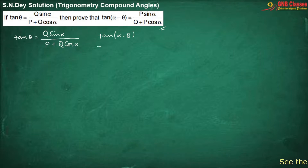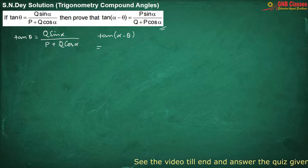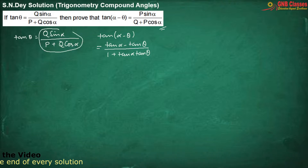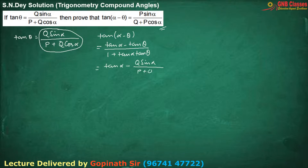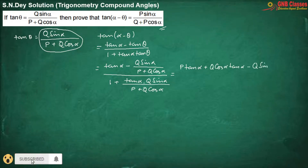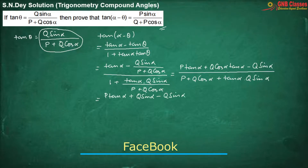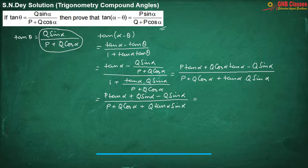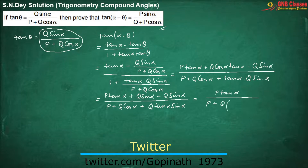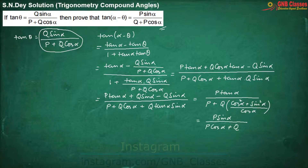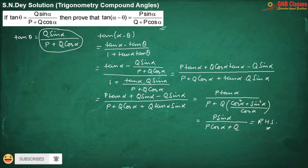What I am doing here is expanding tan alpha minus theta with the help of the formula tan A minus B. Now replacing the value of tan theta by this expression, we are getting the whole divided by the denominator, which is nothing but your right hand side. Is it clear? Okay, let us move for the next problem.